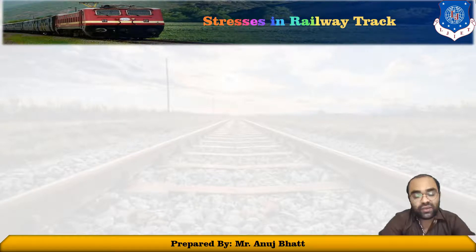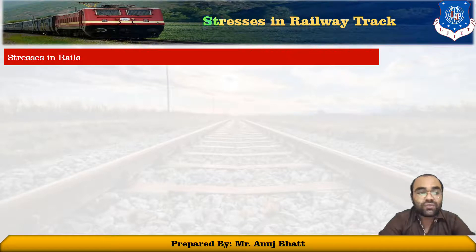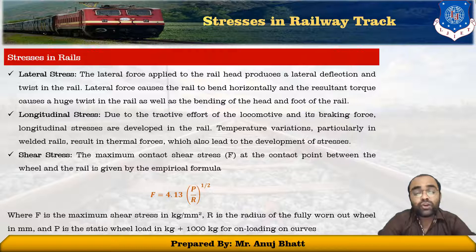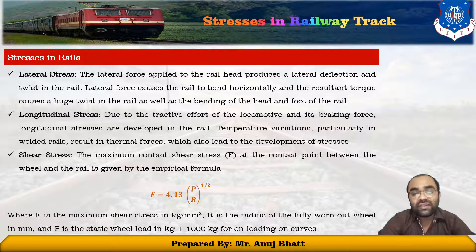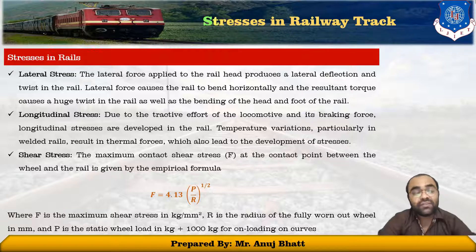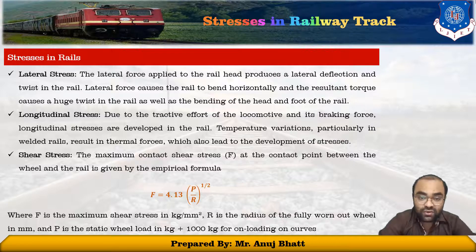Stresses can be exerted in rails, sleepers, and ballast. Starting with stresses in rails, there are three types. First, lateral stresses: the lateral force applied to the rail head produces lateral deflection and twist in the rail. The lateral force causes the rail to bend horizontally and the resultant force causes a huge twist in the rails as well as bending of the head and foot of the rails. Second, longitudinal stress: due to the tractive effort of locomotives and braking force, longitudinal stresses develop in the rail. Temperature variation, particularly in welded rails, results in thermal forces which also lead to stress development.